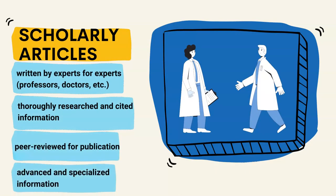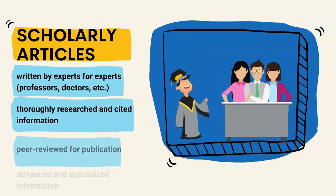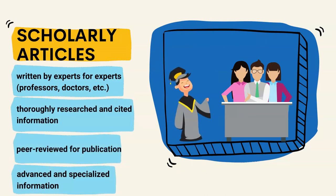Scholarly articles are written by experts for experts in a particular field. They contain original research on a narrowly focused topic and assume that the reader has a basic knowledge of the topic. These articles are heavily cited with a full list of references and are published after a peer review process in which experts evaluate the article for quality and accuracy. Thus, scholarly articles provide high-level information that engages readers with the work of experts in the field.